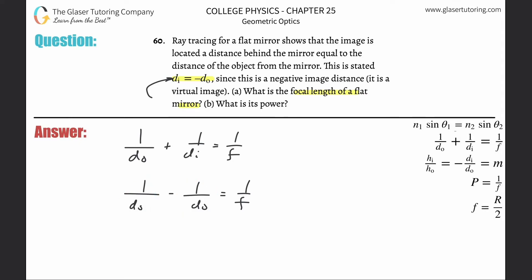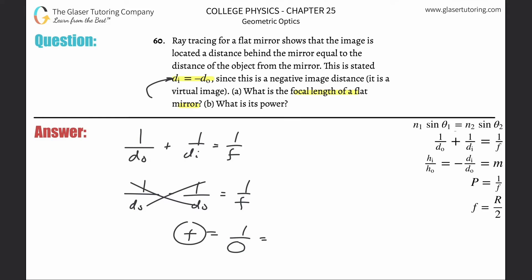If I'm subtracting the same two numbers, what happens? They go to zero. So 1 over F equals zero, and if I solve for the focal length, 1 divided by 0 is undefined — I'm saying it tends toward infinity. So you can also think about it as: if the object and image distances were almost infinitesimally close to one another, the focal length would become so, so large — basically approximating infinity.